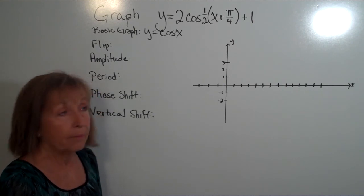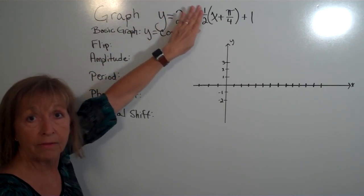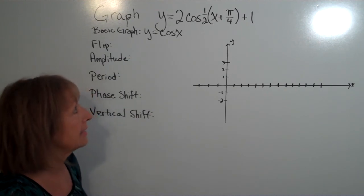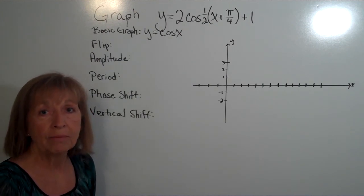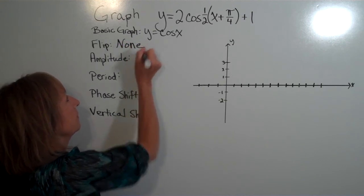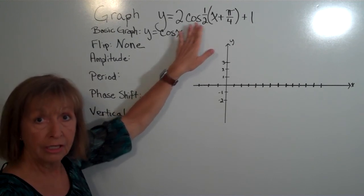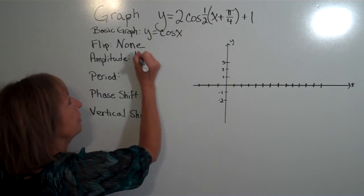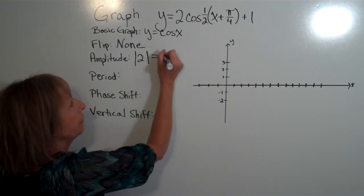Is there a flip? There's no negative sign as a factor multiplied to the trig function, so we're not flipping over the horizontal axis. There's also no negative factor in what the trig function is acting on, so no flip over the y-axis — none for this one. For amplitude: this is a cosine function, so amplitude is the absolute value of the number multiplied to the trig function. The absolute value of 2 is 2.